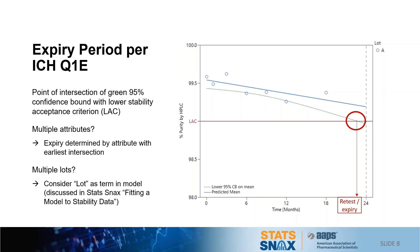For a product with multiple attributes measured on stability, the attribute with the shortest dating period sets the overall retest or expiry date. If there are multiple lots in the data set, a model is fit that accounts for these various lots, which will be the subject of another stats snacks video.